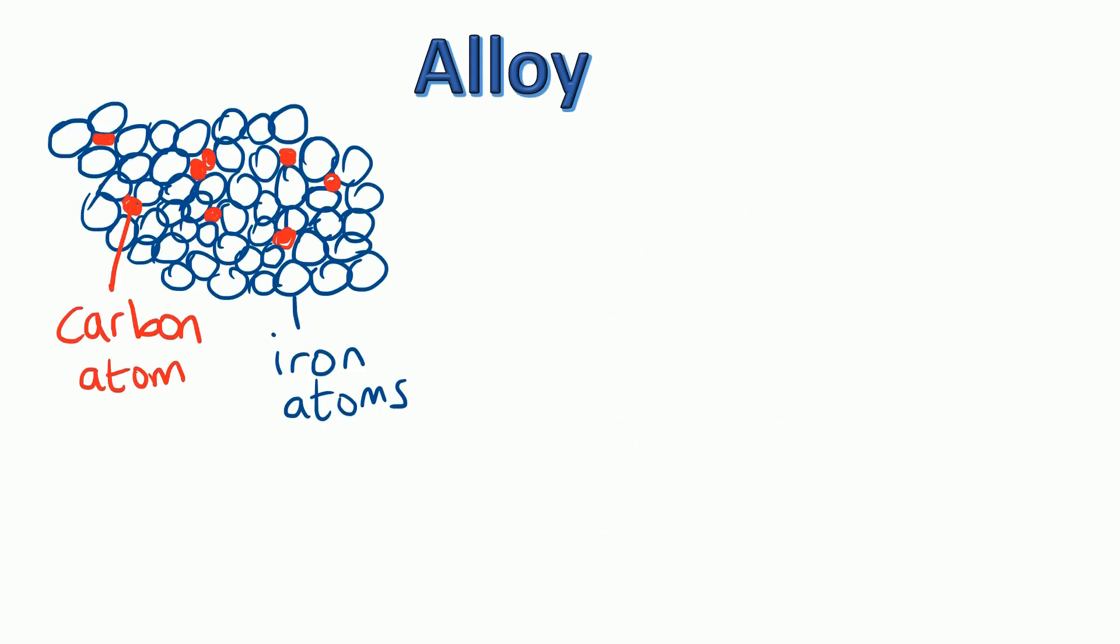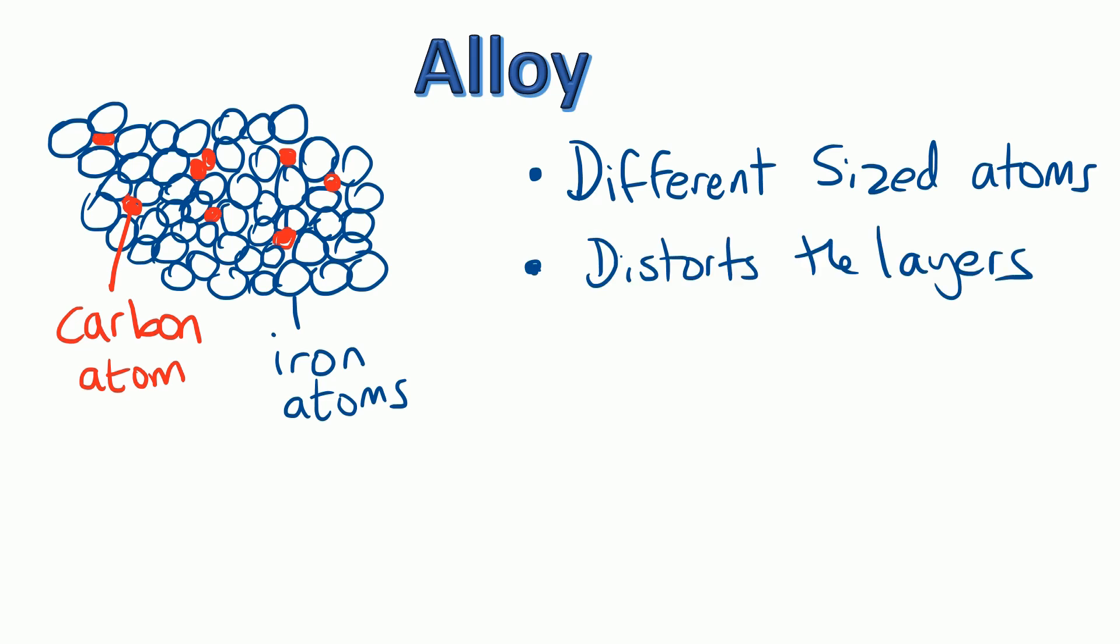We're going to have a look now at how the atoms are arranged differently in an alloy. If you take the example of steel, that's iron mixed with carbon and we can see we've now got different sized atoms - the larger iron atoms and the smaller carbon atoms. This distorts the layers. We can see now that the atoms aren't in nice neat rows and that means the atoms can't slide past each other as easily.